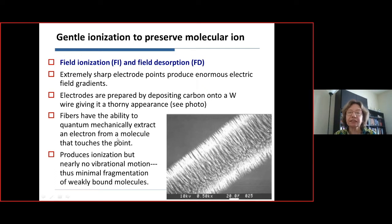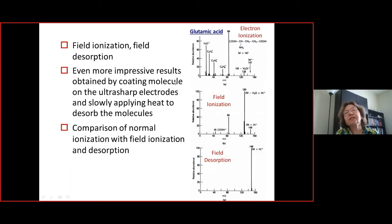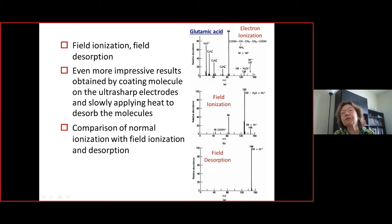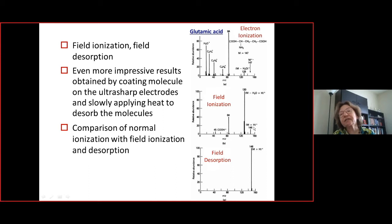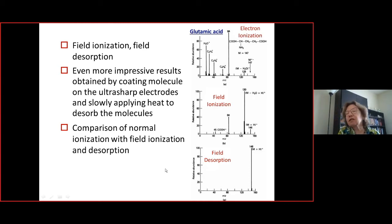Comparing electron ionization to field ionization and desorption with glutamic acid: EI shows no molecular ion — all fragments. Field ionization shows an [M+H]⁺ peak; field desorption is even gentler, showing a strong protonated signal with very little fragmentation. These methods are forerunners to modern ionization techniques.